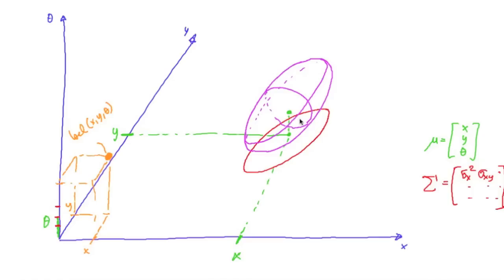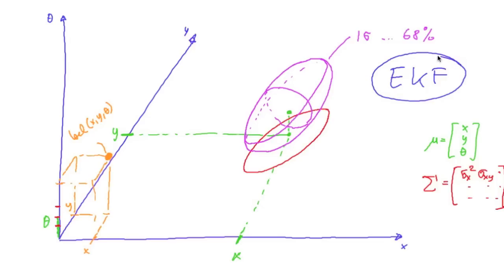So far, we depicted the marginal distributions of the two-dimensional subspace in x-y as an error ellipse, and the marginal distribution in theta as an interval, which we visualized using a plus-minus one-sigma disk segment. A one-sigma error ellipse means that with 68% probability, our true position and orientation of the robot will be within this ellipse. Again, all this was for the extended Kalman filter, where we represented our belief by a Gaussian distribution.